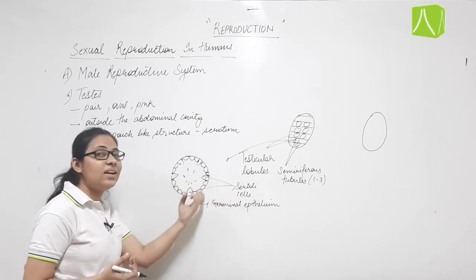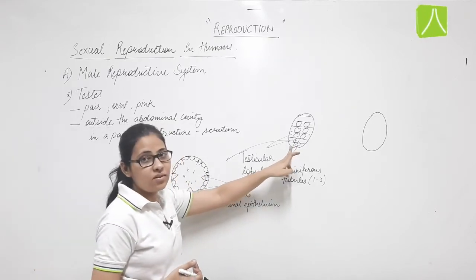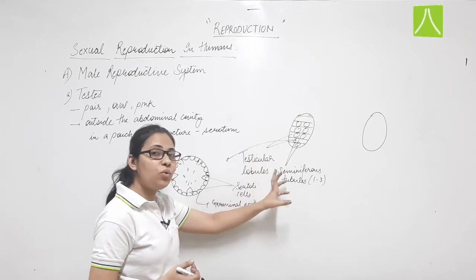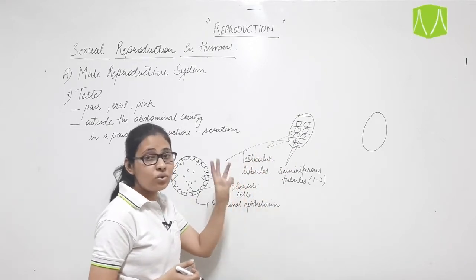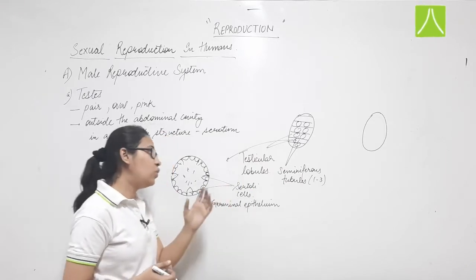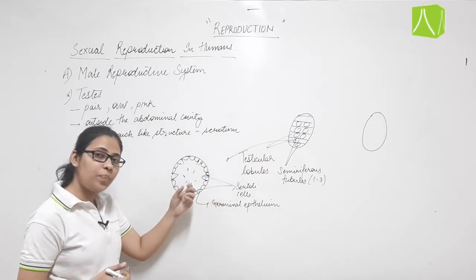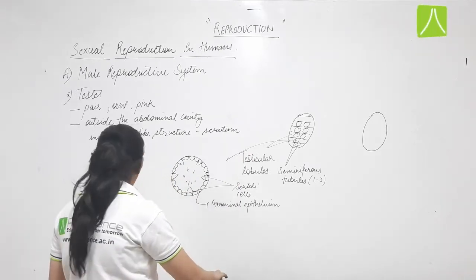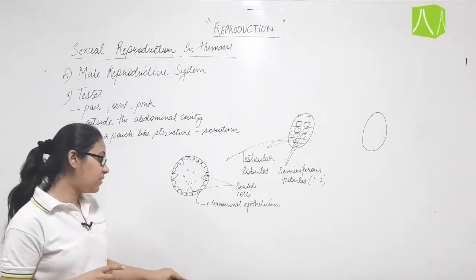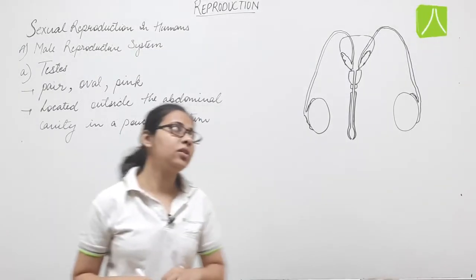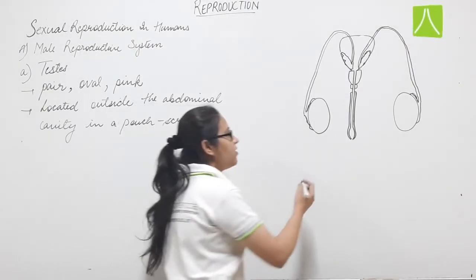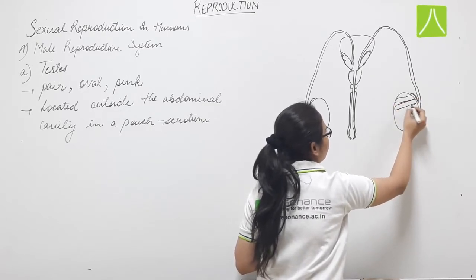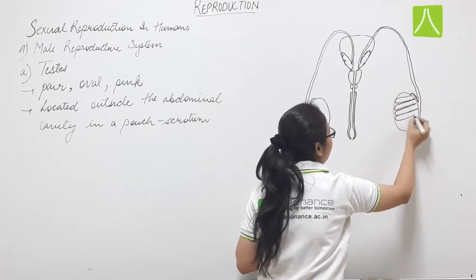This is the internal structure of a single seminiferous tubule. Each testicular lobule contains one to three seminiferous tubules. Each testis is internally divided into 250 testicular lobules.